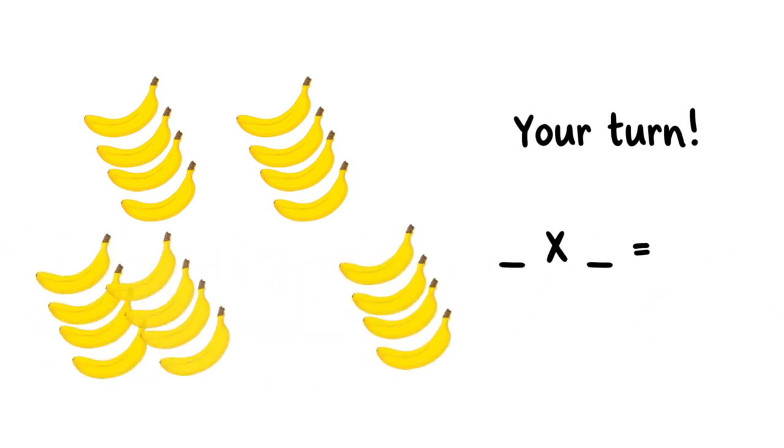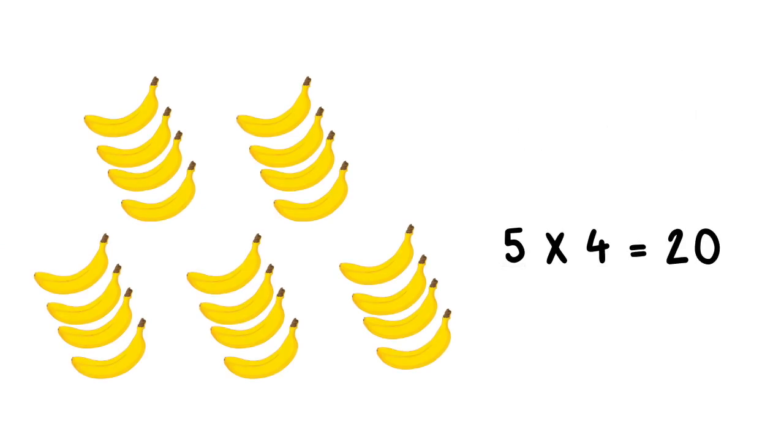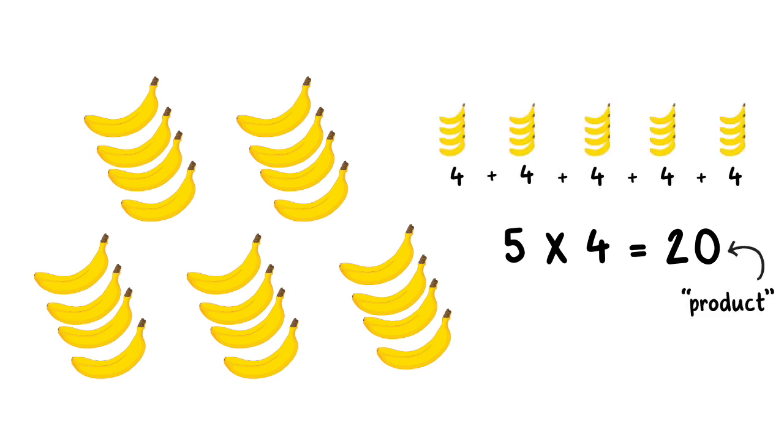Your turn. How would you write it? 5 times 4 is the same as adding 4 together 5 times, which is 20.